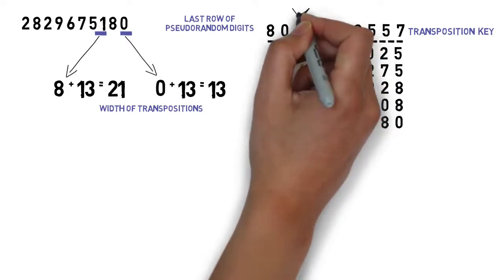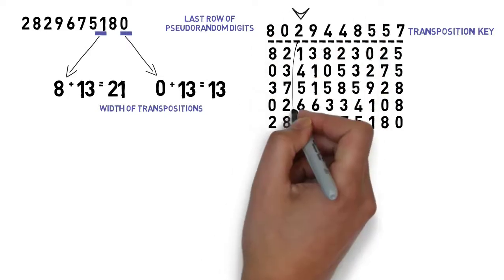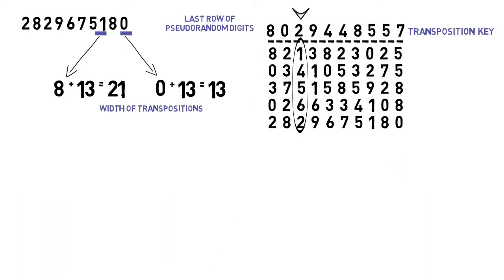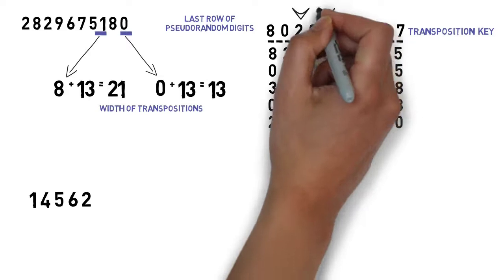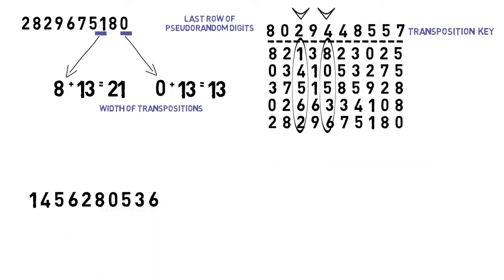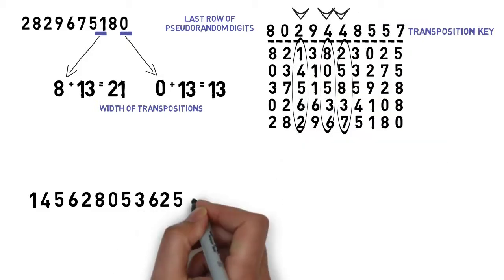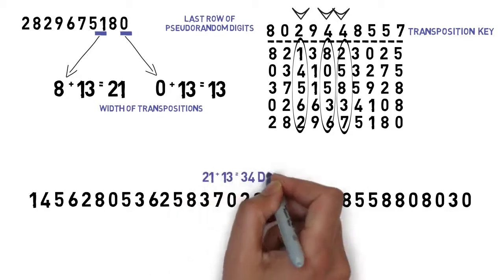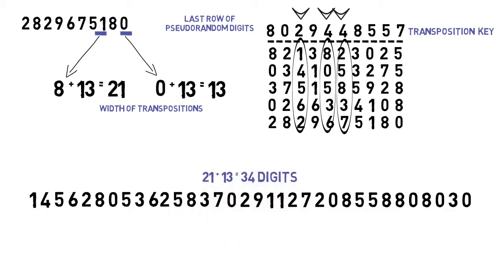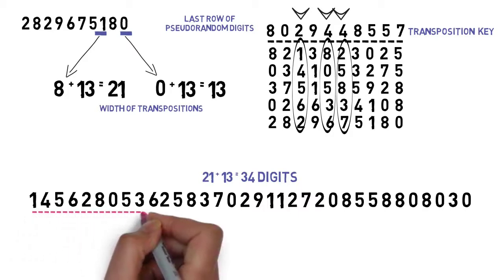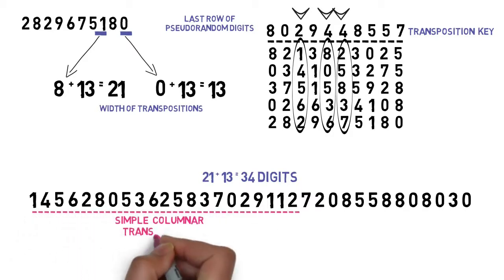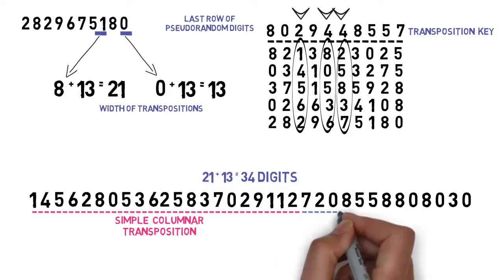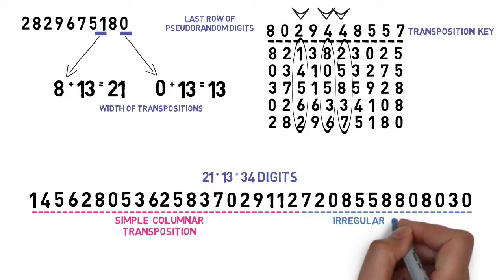We start off with this column that has the smallest index, which is 2. We read out its digits, which are 1, 4, 5, 6, 2. Next is this column of index 4. We read out its digits. Then we go to the other column of index 4, and so on, till we end up with 34 digits, which is the addition of 21 and 13. The first 21 digits of this sequence represent the key of the simple columnar transposition, and the next 13 digits are the key of the irregular columnar transposition.